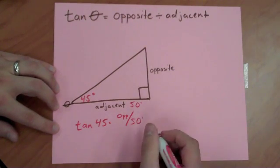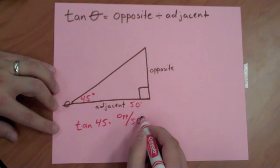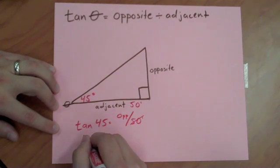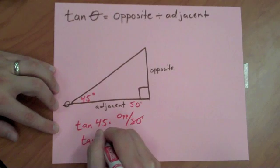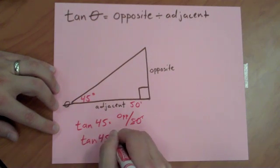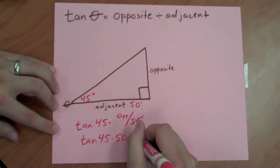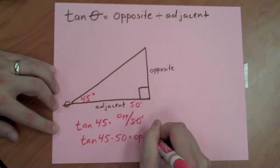Now if I do some simple algebra, multiply both sides by 50, that's going to get rid of the 50 there and put it on the other side. My formula ends up looking like tangent 45 times this 50 equals the length of the opposite side.